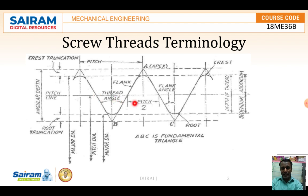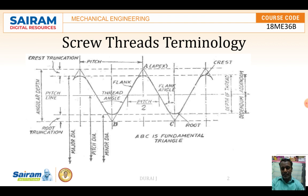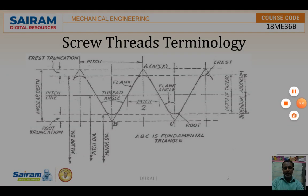At the effective diameter, the pitch between the flanks on both sides is equal, and this is exactly where the mating screw meets. That is about the effective diameter.